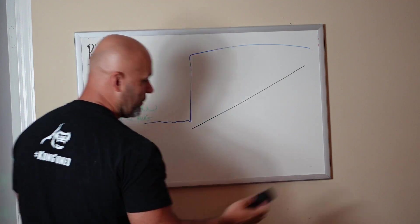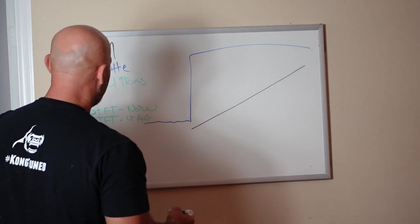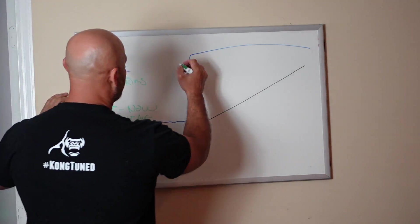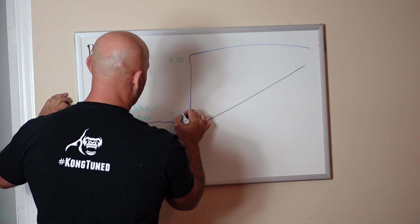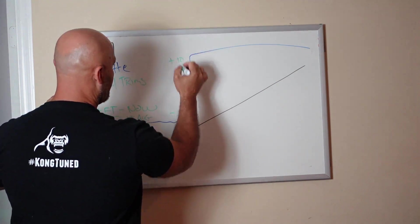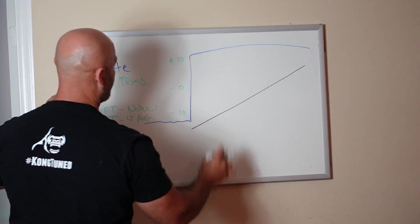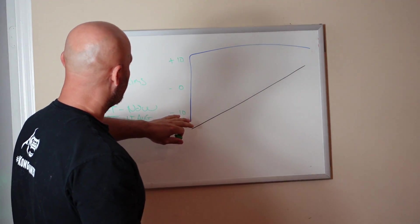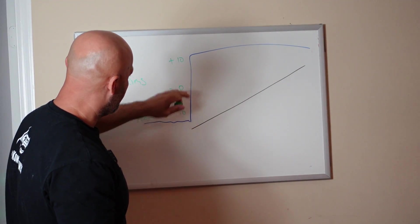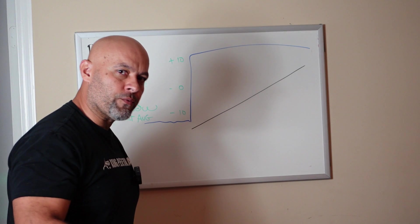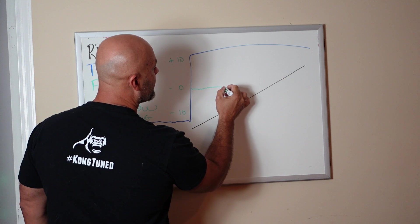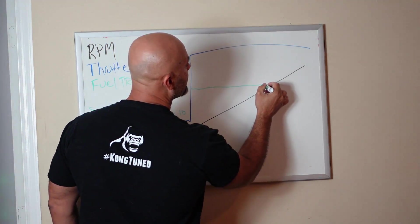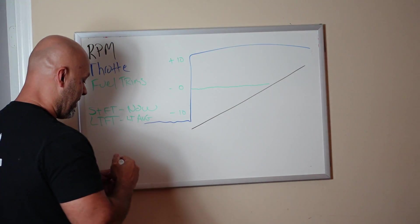Let's do WOT stuff. Wide open throttle. Let's say your fuel trims at WOT—this is plus 10, minus 10. Rich, lean, and zero is perfect. You go wide open throttle naturally aspirated. Your fuel trims are going to graph like that because they're always trimming, they're always moving.